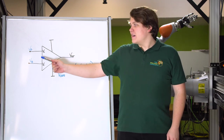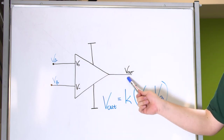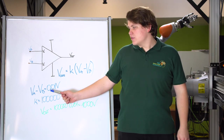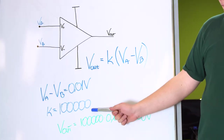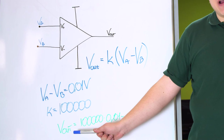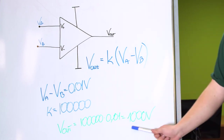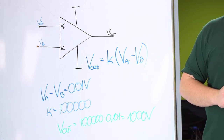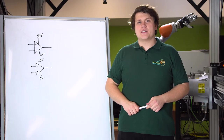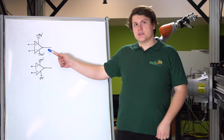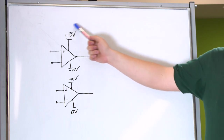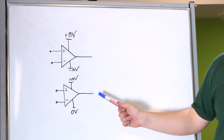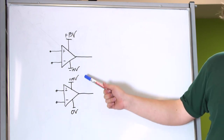Let's mark the non-inverting input as VA and the inverting as VB. The output voltage equals the formula: k times (VA minus VB). The k factor is very large — 10 to 100,000 — so if the difference between inputs is zero, the output voltage will also be zero. If the difference between voltages is around 0.01 volts and k is 100,000, the output voltage should theoretically be around 1,000 volts, but in fact it will be limited by the maximum supply voltage. Such amplifiers can be supplied from symmetrical or asymmetrical voltage.